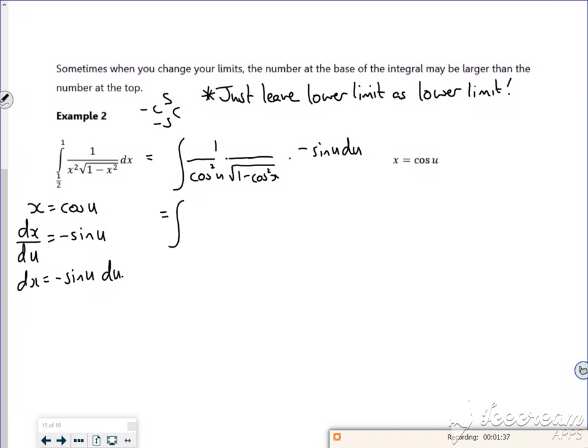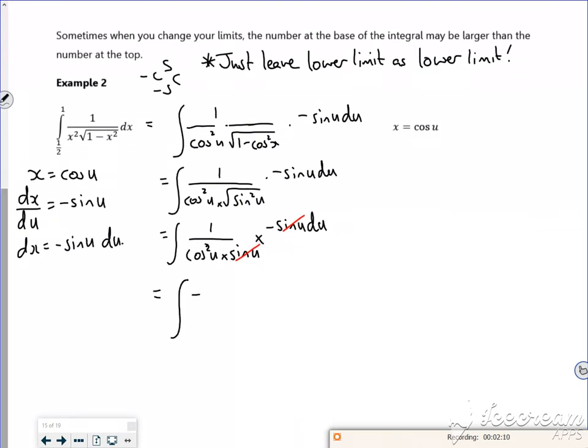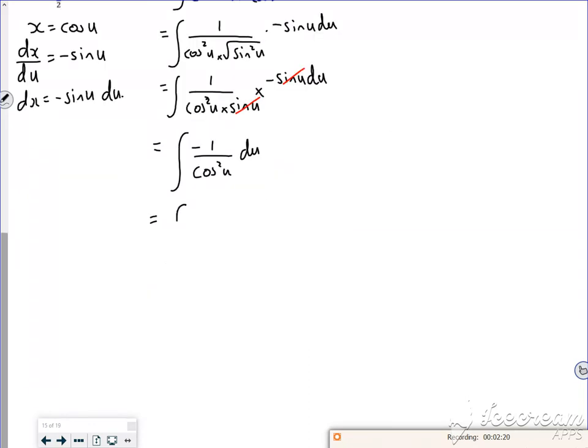The 1 minus cos squared is sine squared. So I've got cos squared u times by the square root of sine squared u times by minus sine u du. The sine squared cancels with the square root. So I've got 1 over cos squared u times by sine u times by minus sine u du. So my sines cancel. So remember, we take it easy with our rearranging and make sure it's all okay. So I've got minus 1 over cos squared u du. 1 over cos squared is secant squared. So I've got minus secant squared u du. So I know if I integrate that up, it's going to become minus tan.